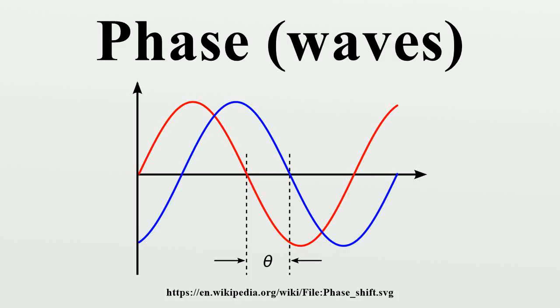Phase in sinusoidal functions or in waves has two different, but closely related, meanings. One is the initial angle of a sinusoidal function at its origin and is sometimes called phase offset or phase difference. Another usage is the fraction of the wave cycle that has elapsed relative to the origin.